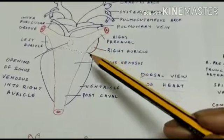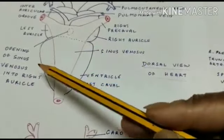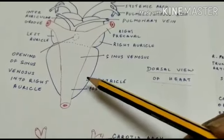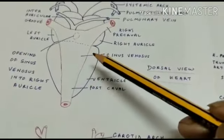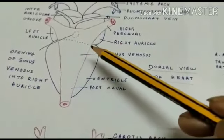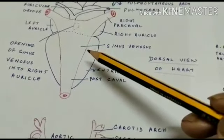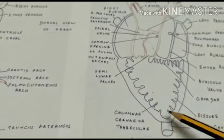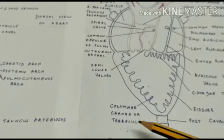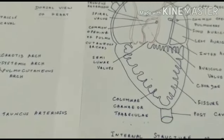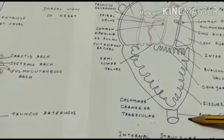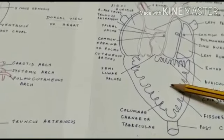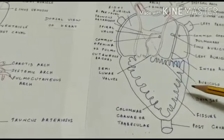The two auricles open into the ventricle. The ventricle is a conical, highly muscular structure. A horizontal groove is present between the auricles and the ventricle, also referred to as a coronary sulcus. Internally, there are several projections within the ventricle referred to as columnae carnae or trabeculae, which reduce the lumen of the ventricle. Auriculoventricular valves are connected to the wall by means of thin threads known as chordae tendineae.